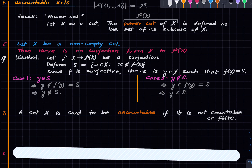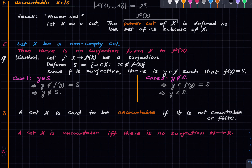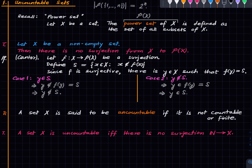Before giving examples, let us state a very useful reformulation of uncountability. Theorem: a set X is uncountable if and only if there is no surjection from the naturals to X. Why is this true? First assume X is uncountable, so X is not countable or finite. If there were a surjection from ℕ to X, then since X cannot be finite by assumption, X would be infinite. But a surjection from ℕ to X combined with infinitude of X means X is countable — a contradiction.